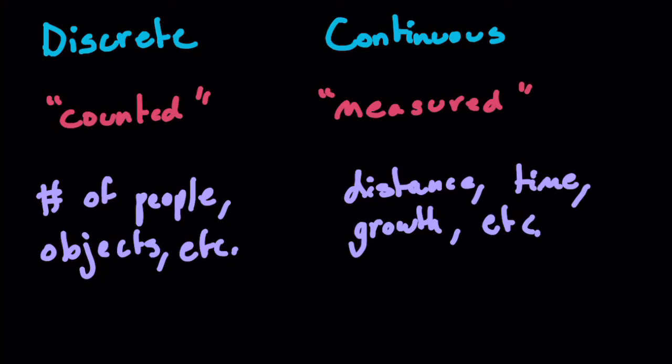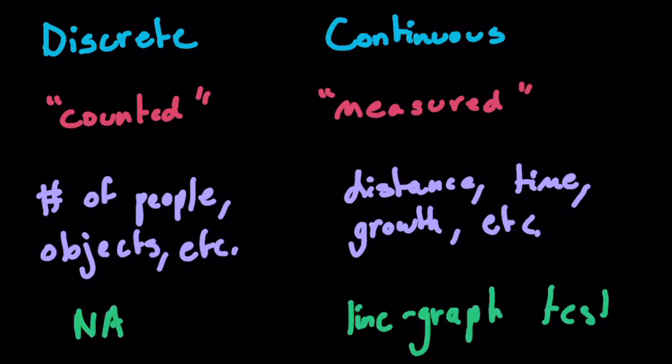And then finally, what I think is the best way to look at discrete data versus continuous data is something I came up with. I call it the line graph test. So essentially what the line graph test is, is can you draw a line graph with this data such that the line is an accurate portrayal? First of all, like say you take discrete data and you're counting the number of people in a class as they walk in.